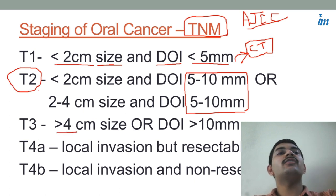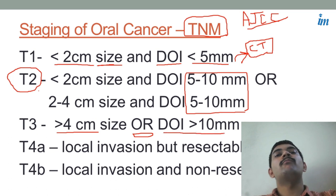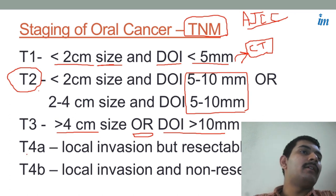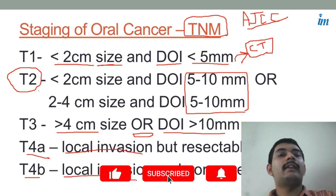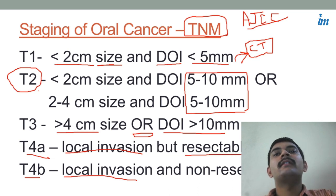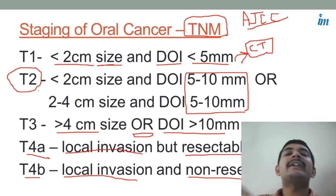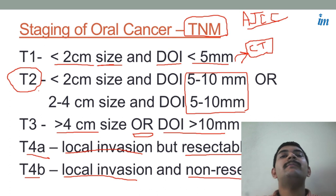T3 is if the size of tumor is more than four centimeters, or — consider this 'or' — depth of invasion more than ten mm. So either a size of more than four centimeters or a depth of invasion of more than ten mm, this is going to be T3. T4 in general is going to be local invasion. Understand the difference between T4A and T4B — it is resectable versus non-resectable. T4A means you can resect and remove the tissue, which involves just the floor of mouth, the alveolar processes, or just the mandible.